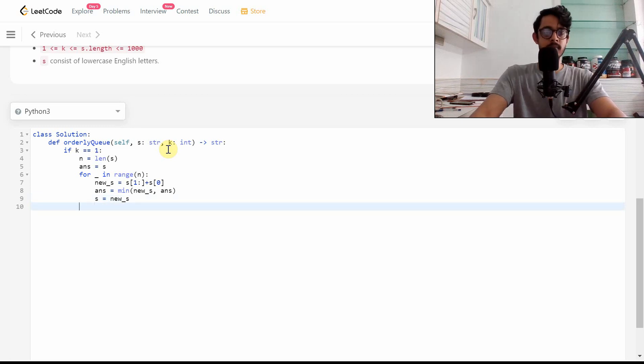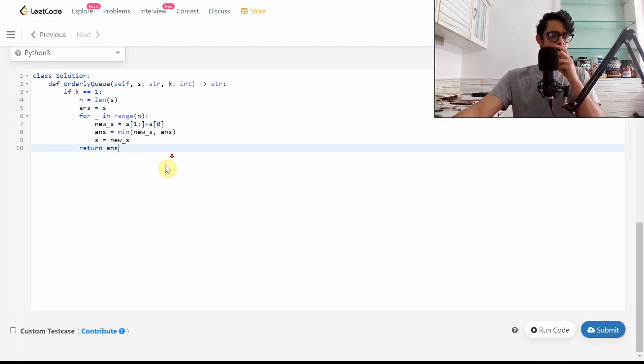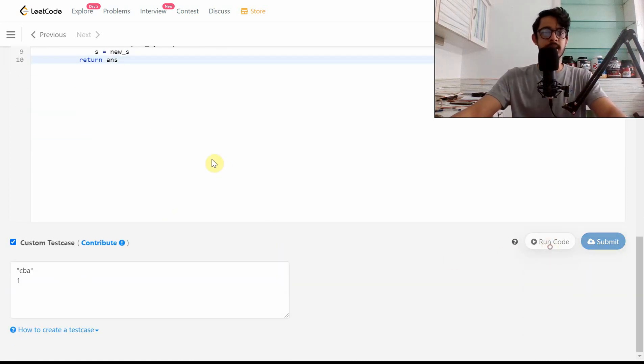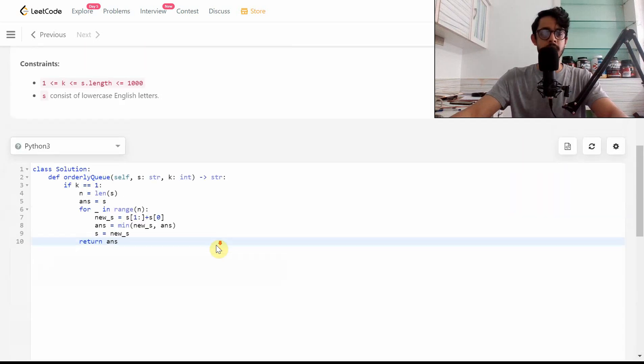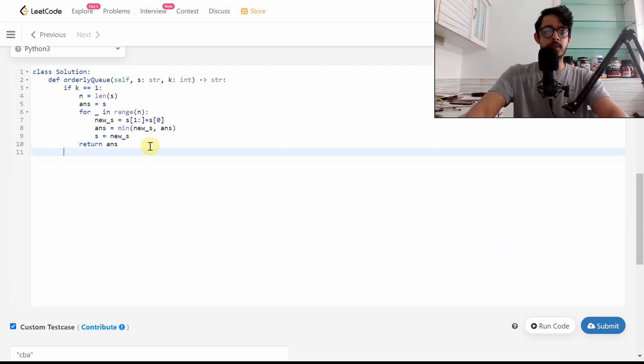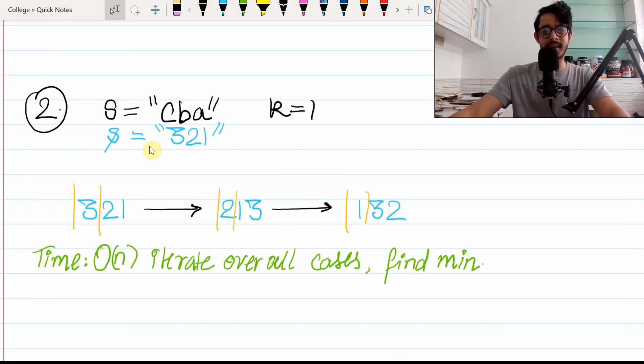And at the end we can just have s equals new_s. Now we want to return the answer here. We'll do a quick sanity check with this test case. Okay, ACB looks correct to me. Cool, so we'll go ahead and write else pass. Now let's go on to the more interesting case.